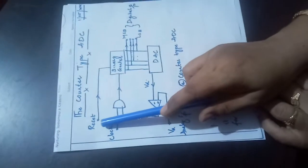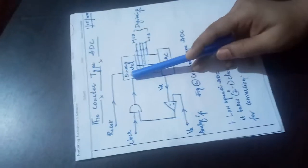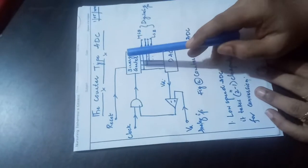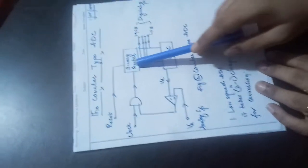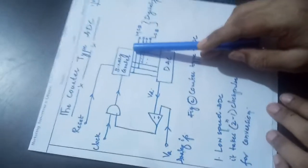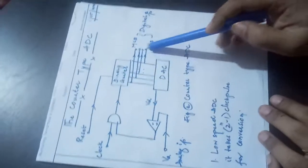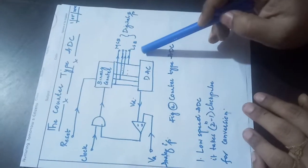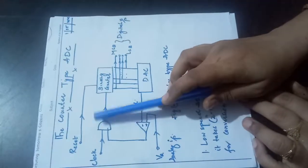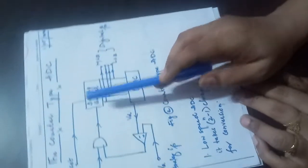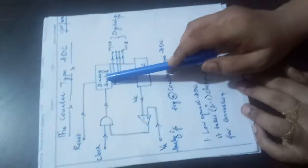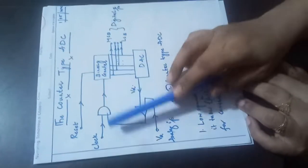Here we are going to apply a reset pulse to this binary counter. As soon as the reset pulse is applied and released, this binary counter is going to be reset to 000 — all the binary outputs will be 000. When the reset pulse is released, the clocks are going to be counted by this binary counter.